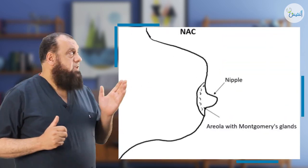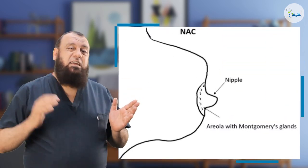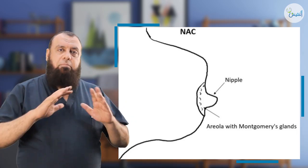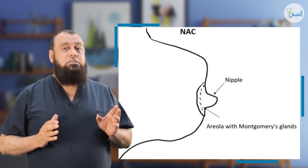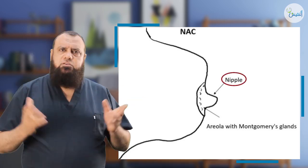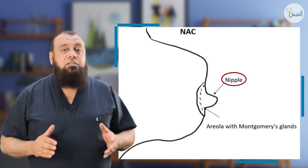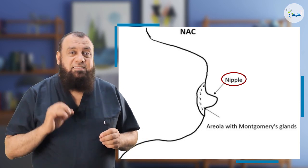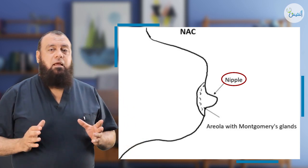Now we are speaking about the structure of the breast. Number one, as we see in this photo, the skin of the breast shows two important structures. Apart from the envelope of the skin covering the breast, there are two important structures. Number one, the nipple. As we know, there are nearly 15 to 20 openings of the milk duct opening into the nipple, and this is very important.